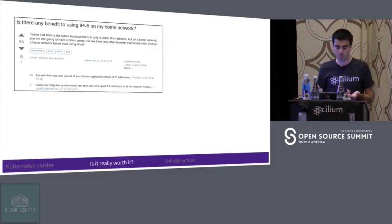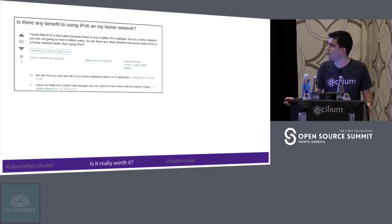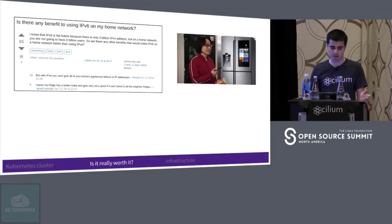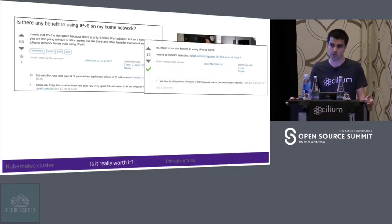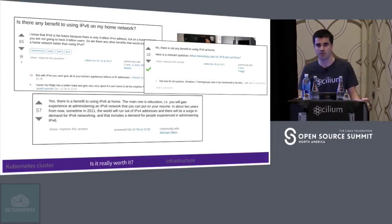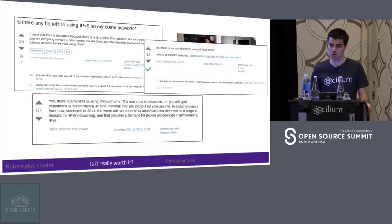So when I start Googling, the first result I got was whether there is any benefit of using IPv6 in my home. The first answer was a funny one: with IPv4, you cannot have billions of IP addresses for your home appliances — so Jingyang would not be able to have his smart fridge at home. The chosen answer was: no, there is not any benefit of using IPv6 at home. I agree more with the next answer, which was: yes, there is a benefit if you are using it for education. If you want to try out IPv6, the safest place to use it is in your home, where you can break things and find out if things work or not. And later on, you can deploy it in your company infrastructure.